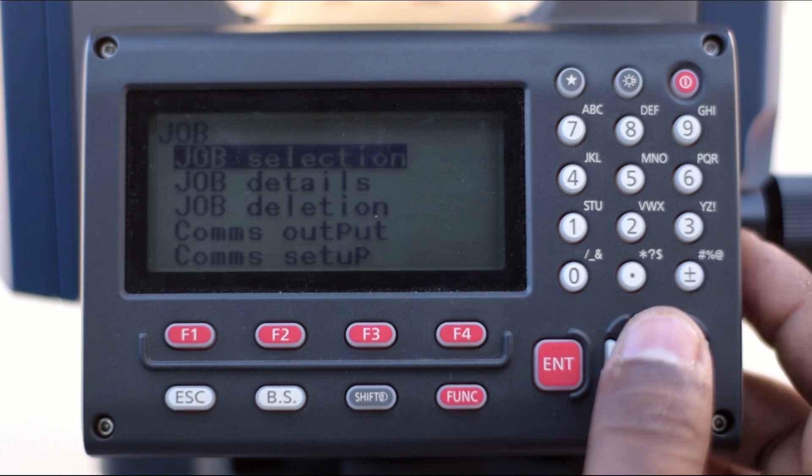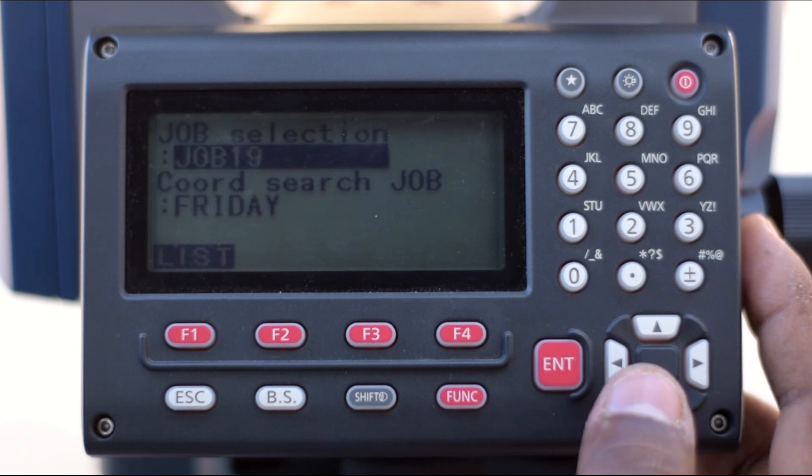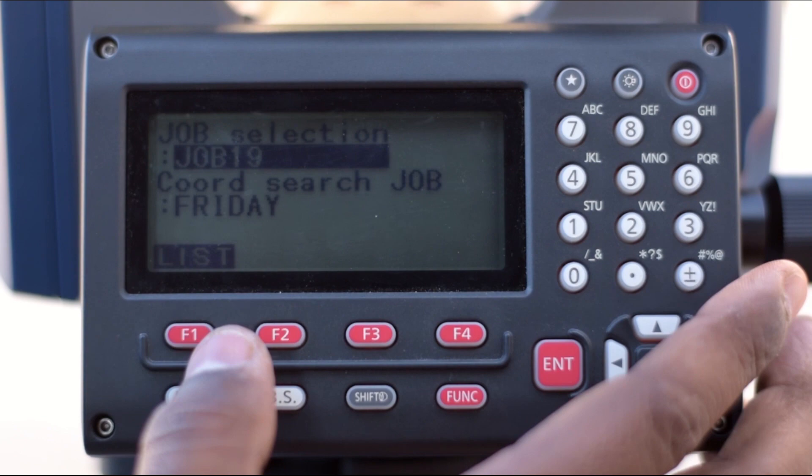Now we have the options of Job Selection, Job Details, and other options. First, we'll go to Job Selection and press Enter. As you can see, there's an option of Job Selection and Coordinate Search Job.